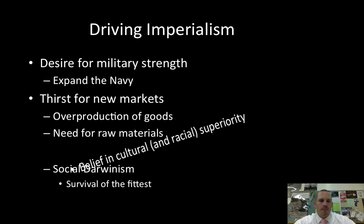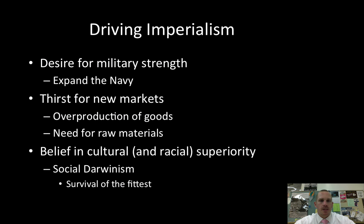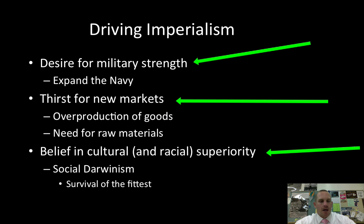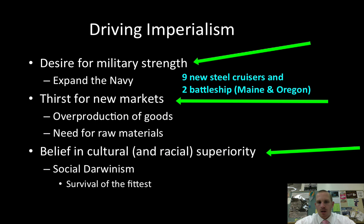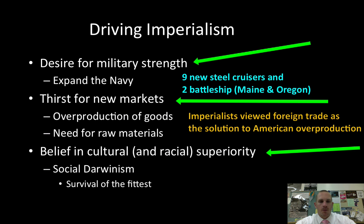What's driving imperialism? There are three major things. First, desire for military strength — Alfred Mahan is going to tell the president we need to expand the Navy if we're going to follow through with this imperialist idea. Second, we have a thirst for new markets. We have overproduction of our goods during the industrialization period; we are far outproducing what we can consume ourselves, and our raw materials are running low. So we have to find new markets and raw materials to extract from them as well.